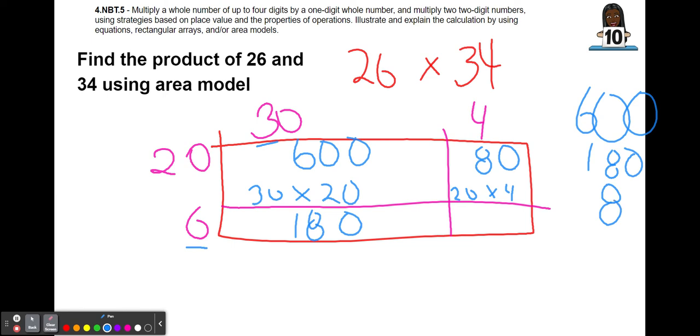Next, we're going to put our 80 off in our partial products. And last, we need to multiply 6 times 4 which is 24.